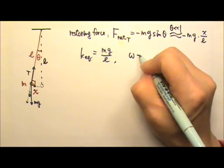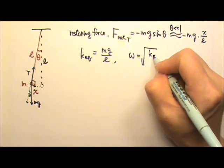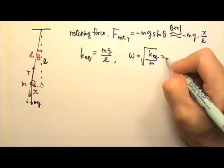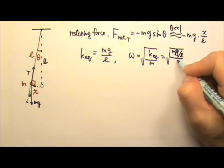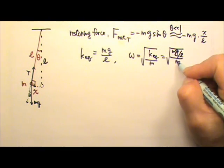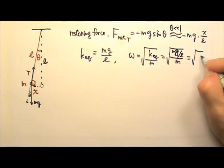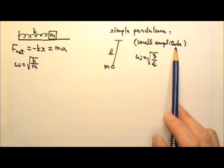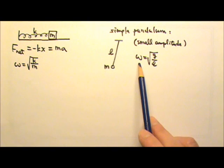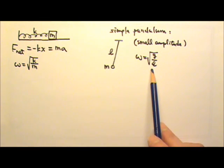This means the omega, which is the square root of k equivalent over M, would be the mg over L divided by M. The mass cancels, the omega is square root of g over L. So a simple pendulum in small amplitude oscillation is a simple harmonic oscillator, and its omega is the square root of g over L.